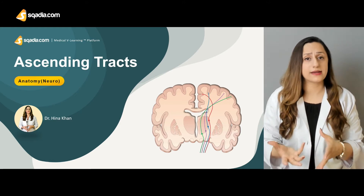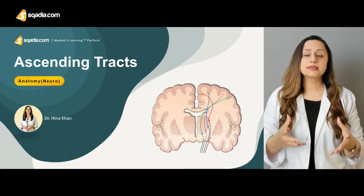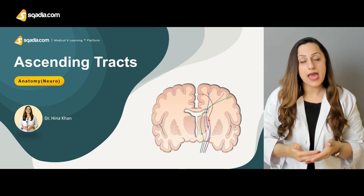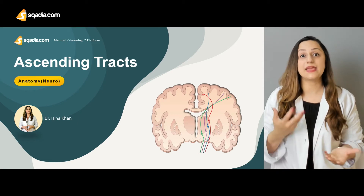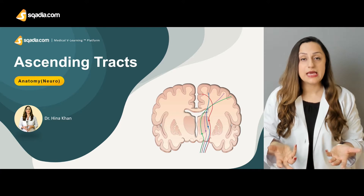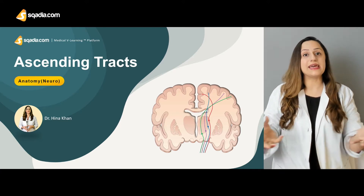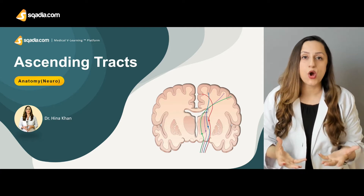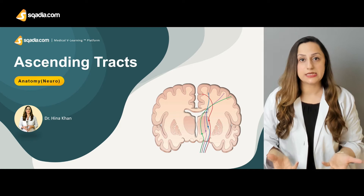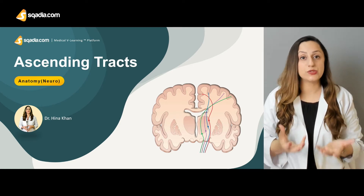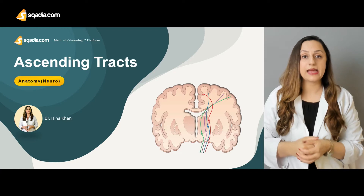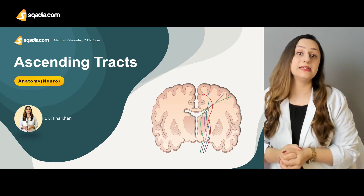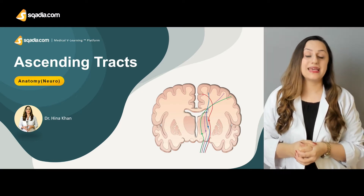What are tracts, basically? Tracts are made up of the fibers or the axons that have the same origin and they also have the same destination in the central nervous system. So, the information is basically collected from the periphery, and for the final integration and for the final outcome or the reflex action, we have to carry this information towards the central nervous system. And these tracts, these roads or these pathways, are basically considered as the ascending tracts.